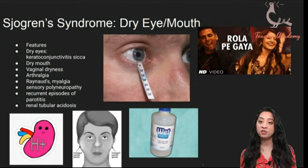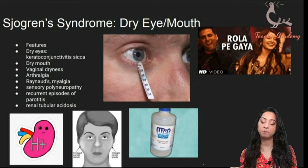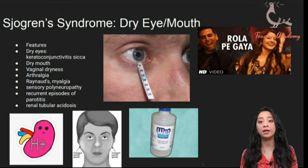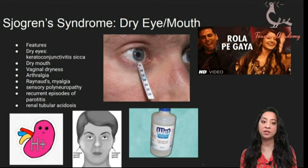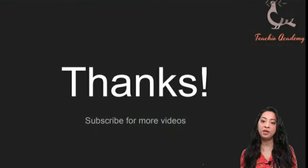Because it's an autoimmune disorder, treatment is largely supportive — artificial saliva, artificial eye drops, and lubricants. The image shown is the Schirmer's test, used to assess whether a patient has dry eye: a paper strip is placed into the patient's eye and you look at how many centimetres fill with fluid. If it fills up less than expected, the patient may have dry eye. And because it's a lymphocytic infiltration, a biopsy might show lots of lymphocytes.